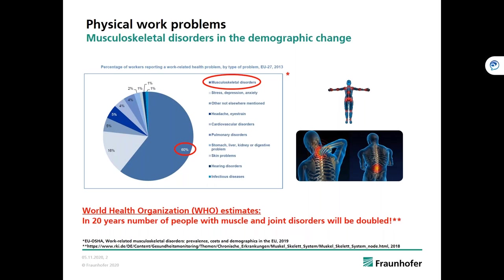Physical work problems are still a big challenge we have to handle now and in the future. Especially musculoskeletal disorders in the context of demographic change are a big problem for almost all societies in the European Union. 60% of workers in the EU complain about work-related health problems caused by musculoskeletal disorders. Further, the World Health Organization roughly estimates that the number of people affected by muscle and joint disorders will be doubled in 20 years.